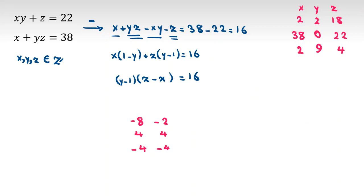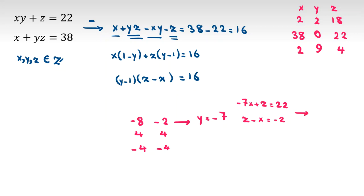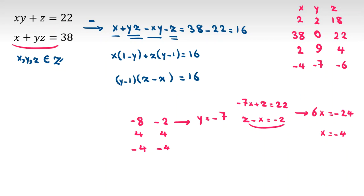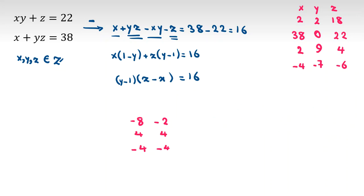Case (-8, -2): y minus 1 = -8, so y = -7, z minus x = -2. Replacing y = -7: -7x + z = 22. Second minus first gives 6x = -24, so x = -4. Then z = x minus 2 = -6. Checking: x·y + z = 28 minus 6 = 22 ✓, x + y·z = -4 + 42 = 38 ✓. Valid: (-4, -7, -6).